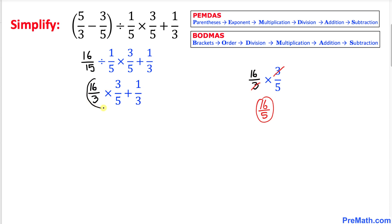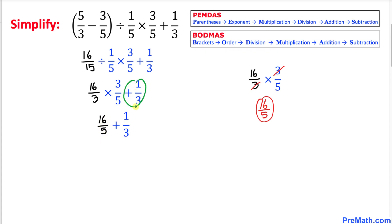Therefore, I'm going to replace this one with the simplified form, which is 16 divided by 5, and then I brought down this 1/3 over here. Finally, let's add these two fractions using the same crisscross method.